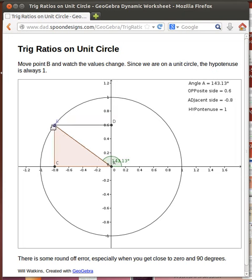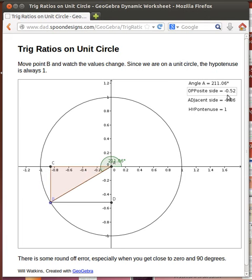But if we move down into this third quadrant, then the sine becomes negative because the opposite side is a negative amount and the hypotenuse is always a positive 1. So the sine is negative through there. You can watch the opposite side and see what it's doing.